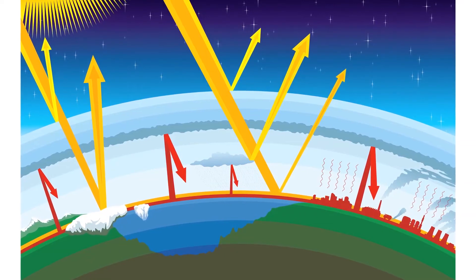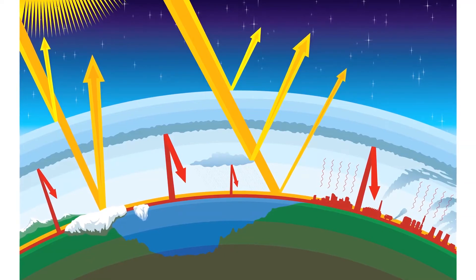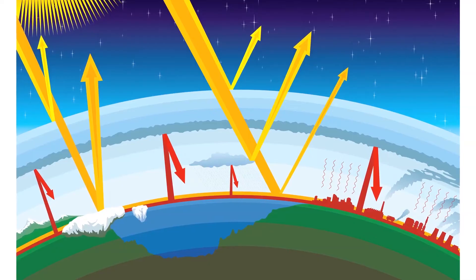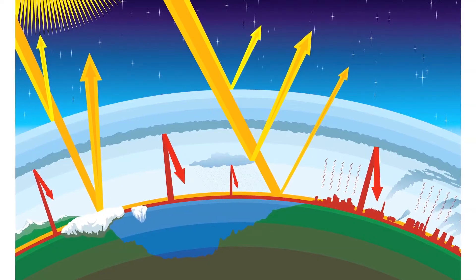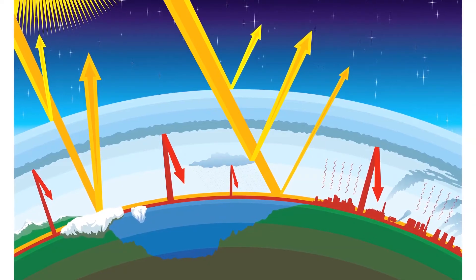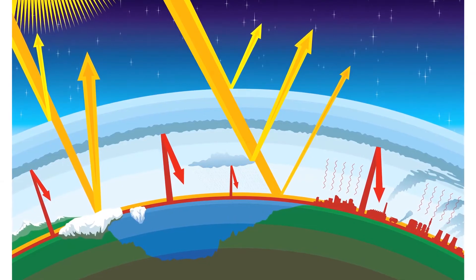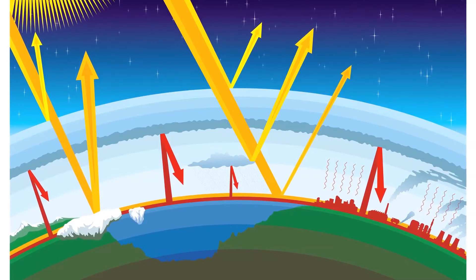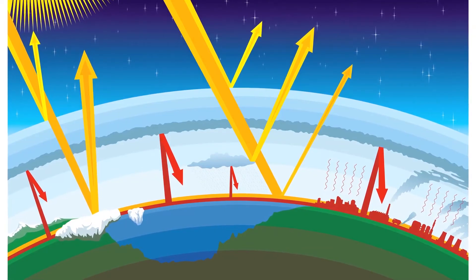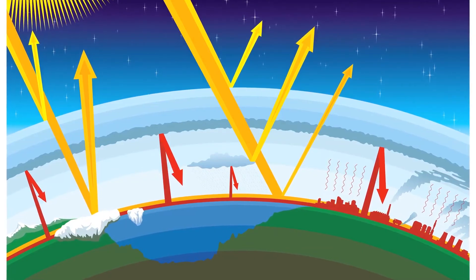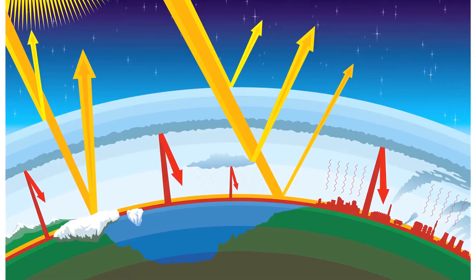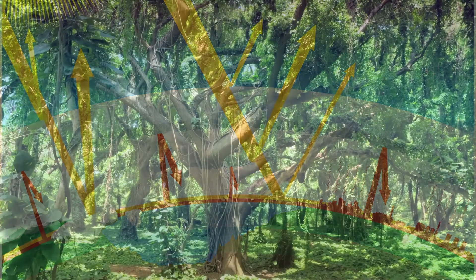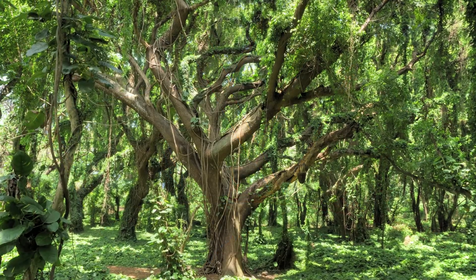Due to this phenomenon, the atmosphere acts like the glass of the greenhouses. That is, it is transparent for the solar radiation that comes from the sun. However, it is partially opaque in the case of thermal radiation emitted by the earth's surface.